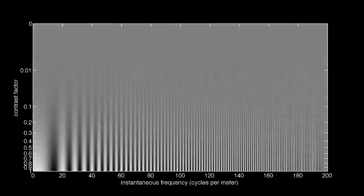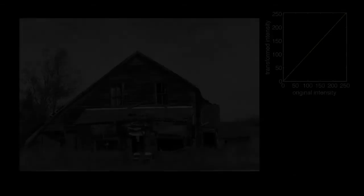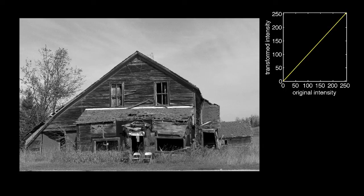Now let's take a look at how contrast changes the appearance of an actual photograph. Well, here's a black and white image of an old house. The plot in the upper right shows the relationship between the original intensity in the image and the transformed intensity. The original intensity is represented by 8 bits, so its values range between 0 and 255. For this first example, the transformed intensity is simply the original intensity, so the relationship between the two intensities is a straight line.